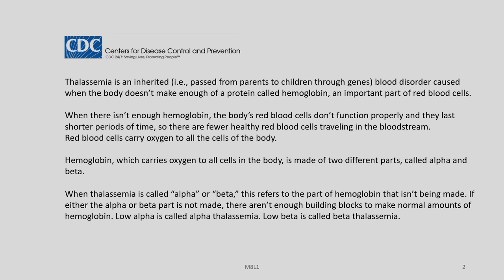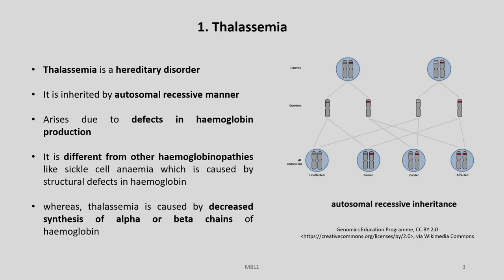Hemoglobin, which carries oxygen to all cells in the body present in the red blood cells, is made of two different parts called alpha and beta. When thalassemia is called alpha or beta, this refers to the part of the hemoglobin that is not being produced by the body. If either the alpha or beta part is not made, there are not enough building blocks to make normal amounts of hemoglobin. Low alpha is called alpha thalassemia and low beta is called beta thalassemia.